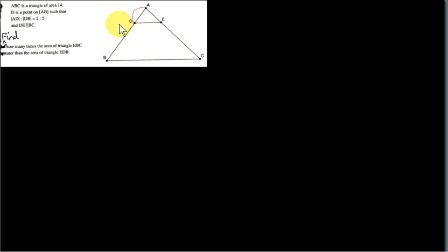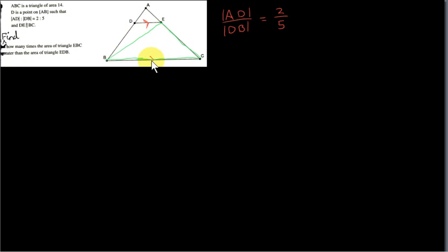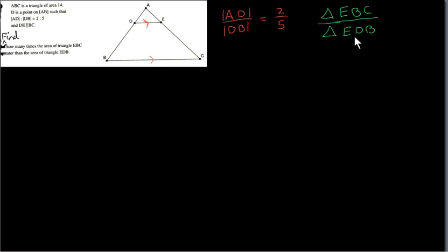ABC is a triangle of area 14. D is a point on AB such that AD to DB is 2 to 5, meaning the length AD divided by length DB equals 2 over 5. Also, DE is parallel to BC. We need to find how many times the area of triangle EBC is greater than the area of triangle EDB — in other words, take the area of triangle EBC and divide it by the area of triangle EDB.